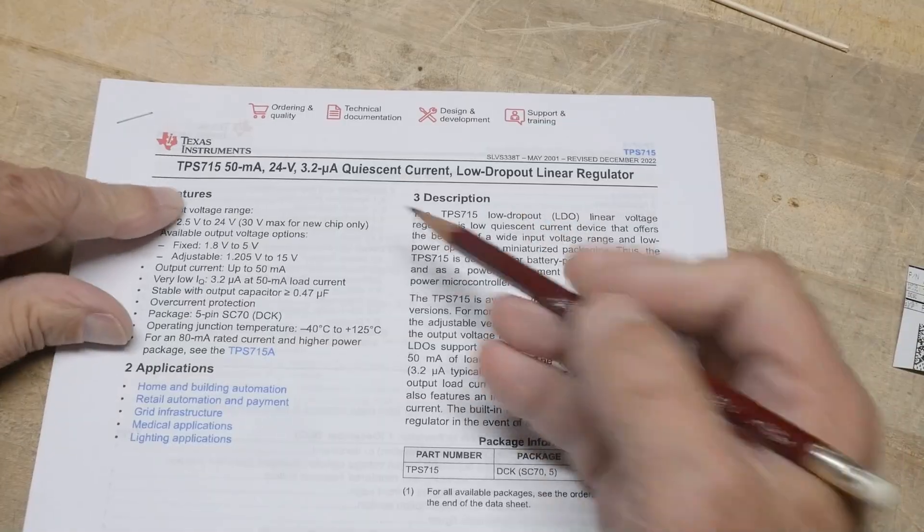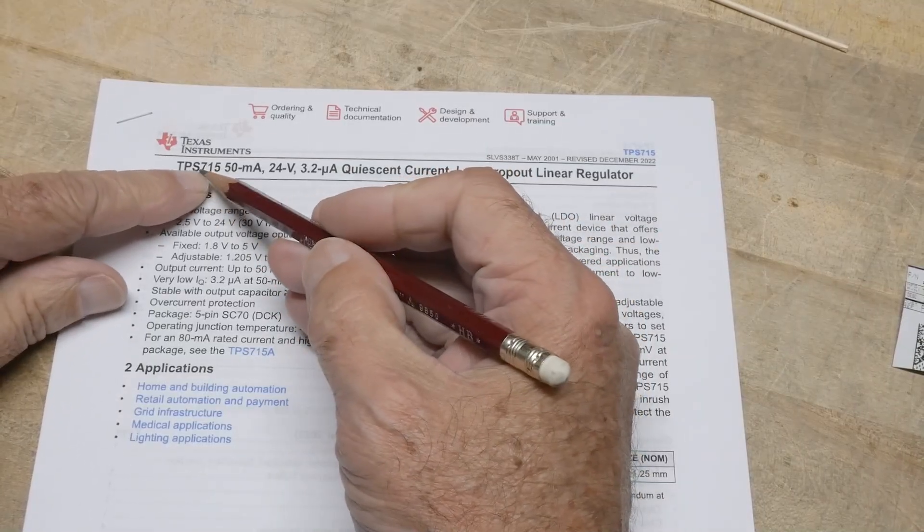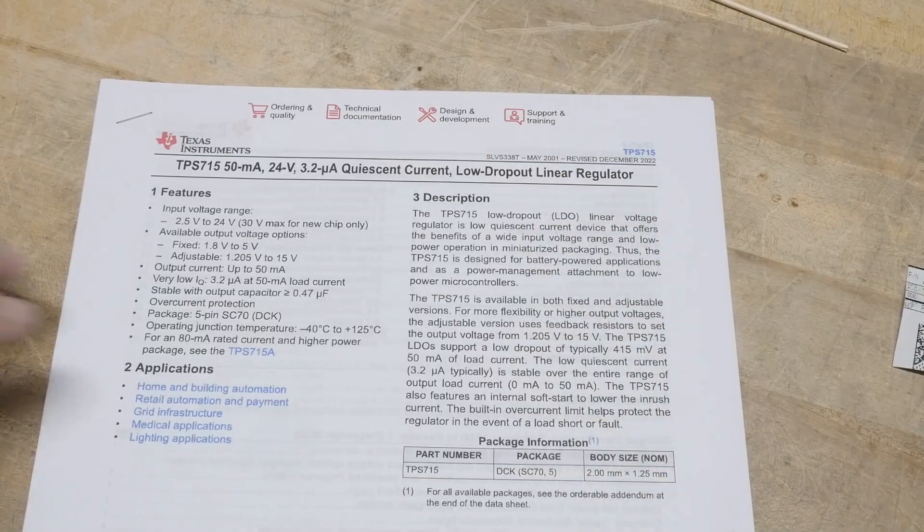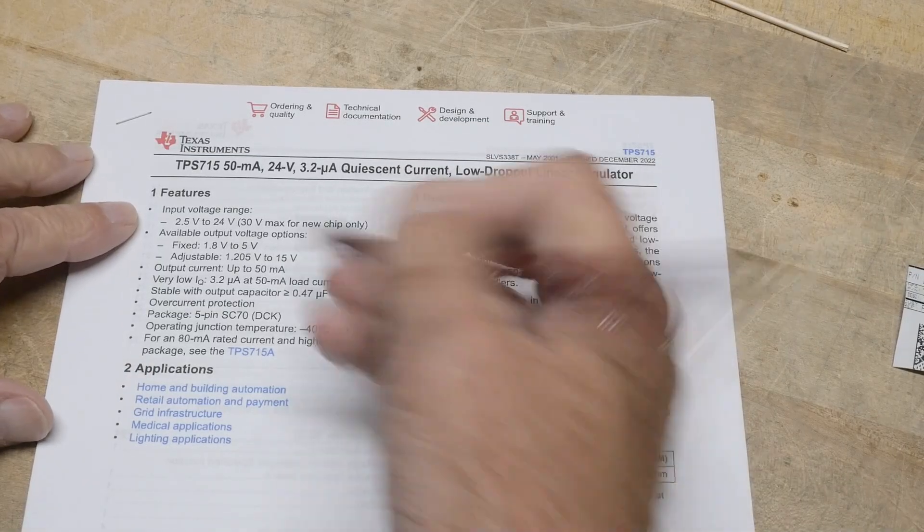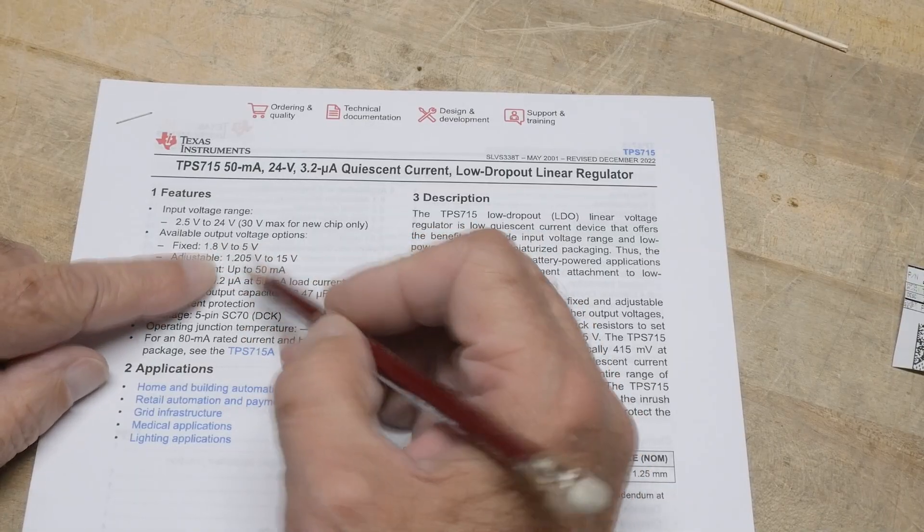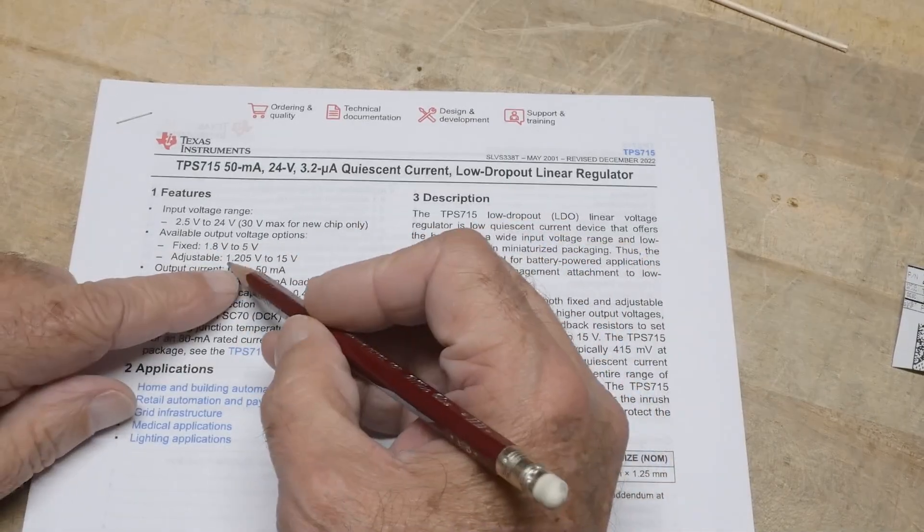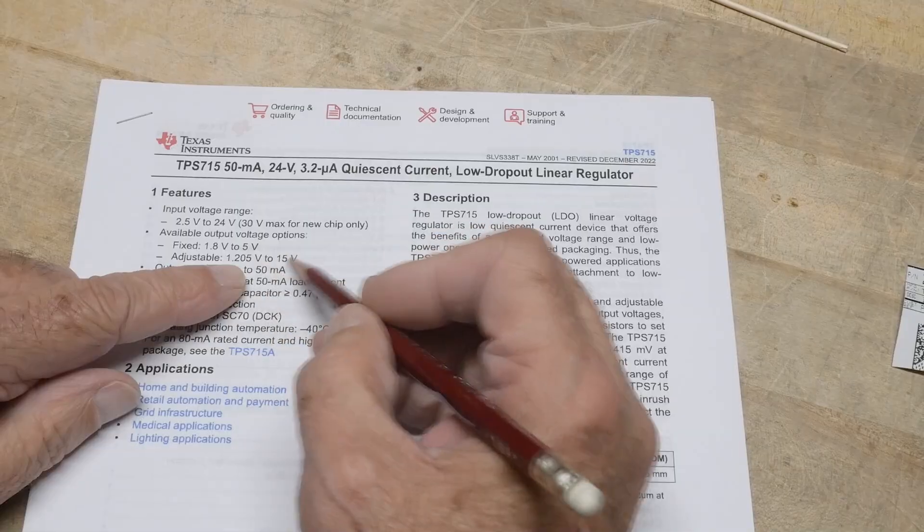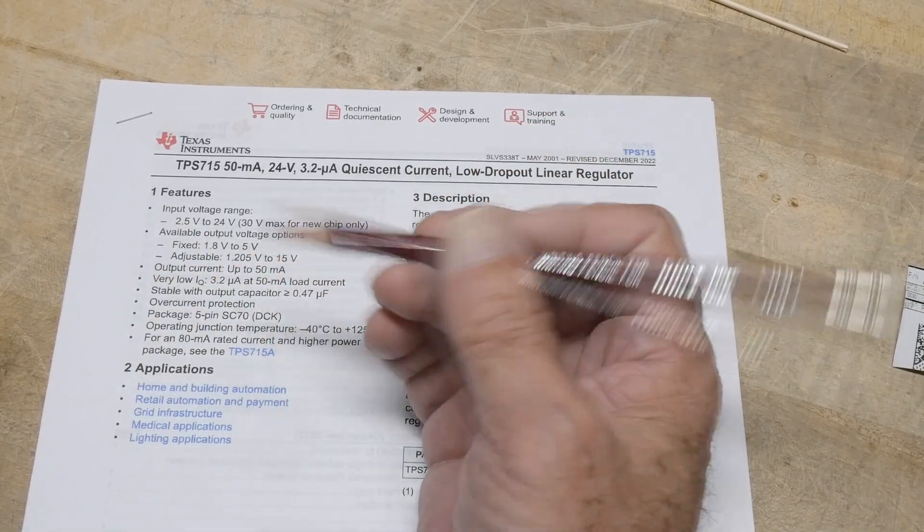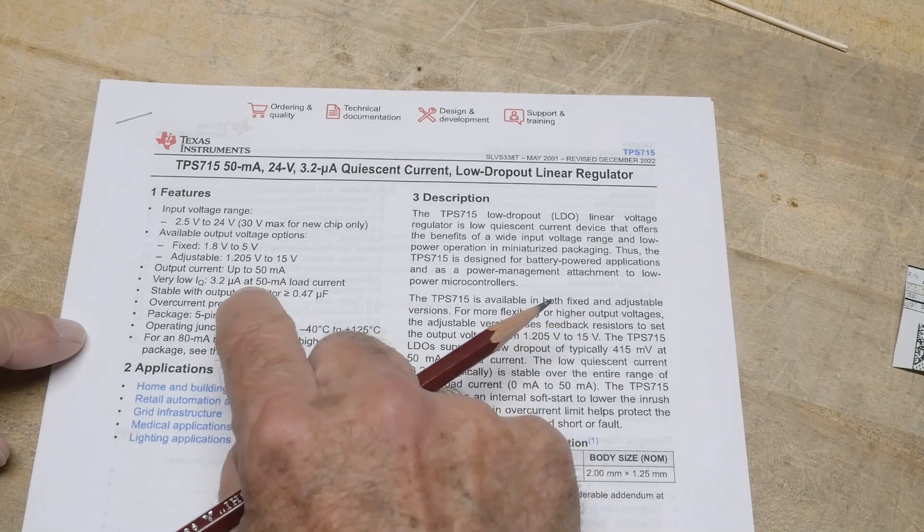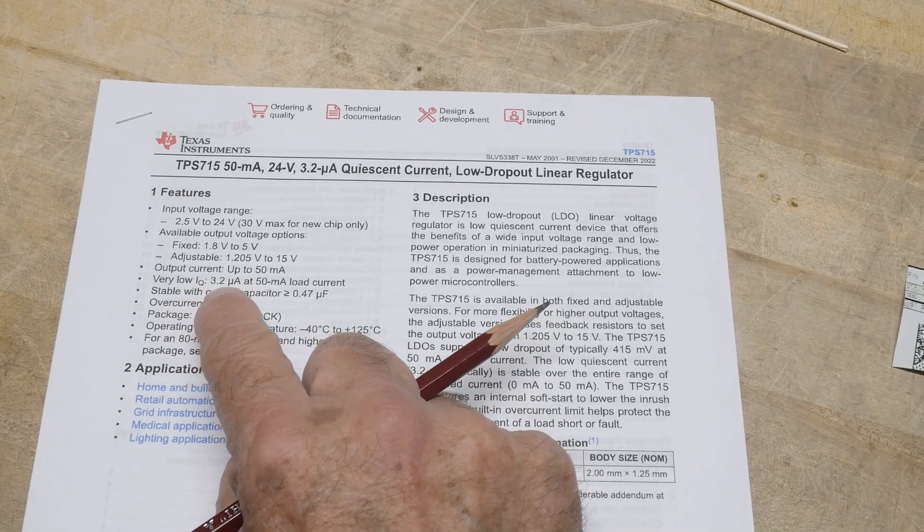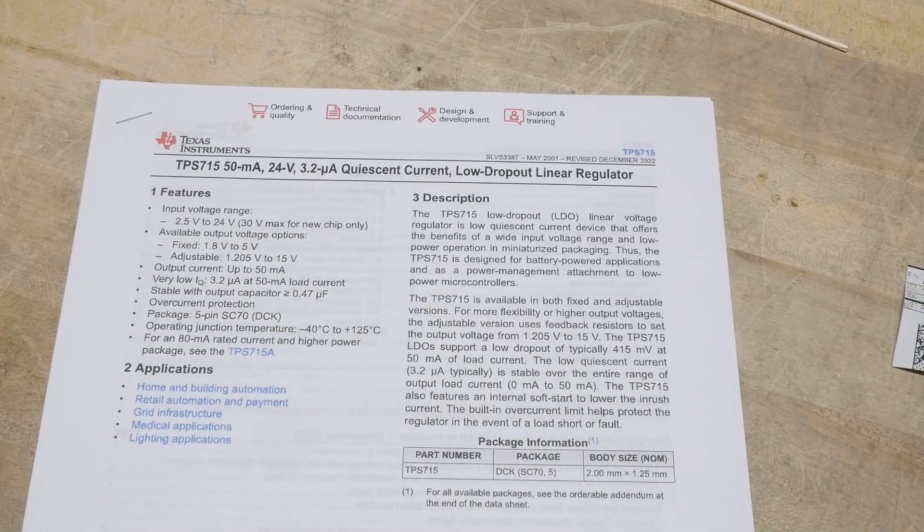Let's look at the datasheet. This is for the TPS715 series. I think that the other number means other things. So there's a range. There's a fixed range from 1.8 to 5, and then there's an adjustable version that goes from 1.2 to 15 volts. Output currents, only 50 milliamp output current, but it has a very, very low quiescent current, 3.2 microamps. So that's pretty cool.